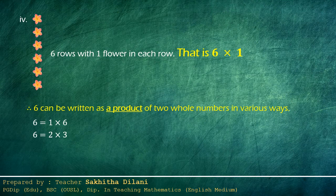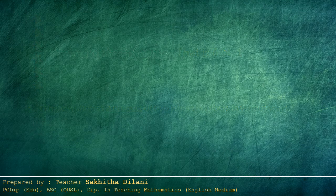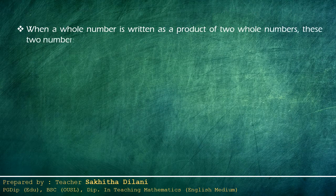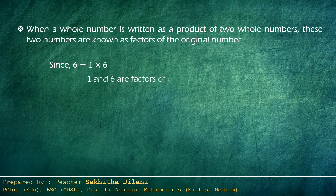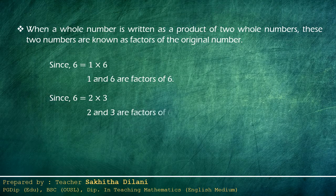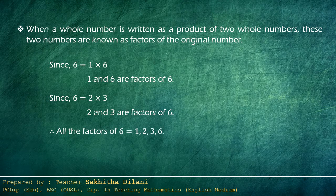Now let's see what a factor is. When a whole number is written as a product of two whole numbers, these two numbers are known as factors of the original number. Since six equals one times six, one and six are factors of six. As well as, since six equals two times three, two and three are factors of six. So all the factors of six are: one, two, three, and six. There are four factors for six.